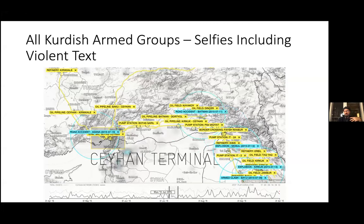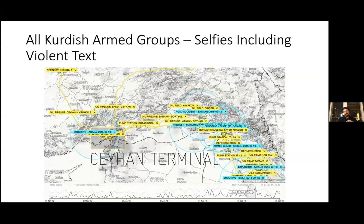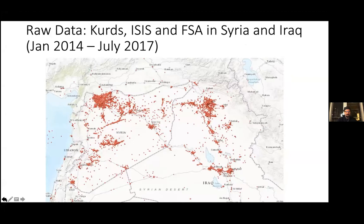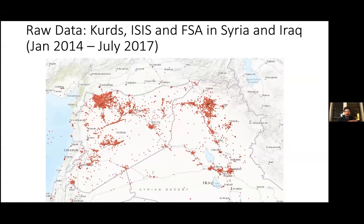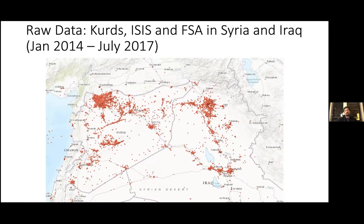Another example showed Kurds, ISIS, and the Free Syrian Army in Syria and Yabrak. This is dirty, uncleaned data — you can see dots in the sea, which is an artifact — but even this gives you a lot of event clusters. Even uncleaned, this provides a more granular violent event map compared to more formal sources like the Institute for the Study of War or Human Rights Watch.